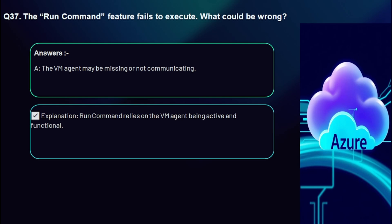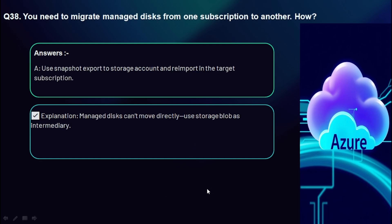Question 38: The Run Command feature fails to execute — what could be wrong? The VM agent may be missing or not communicating. Run Command relies on the VM agent being active and functional.